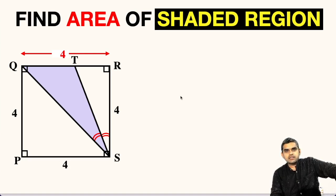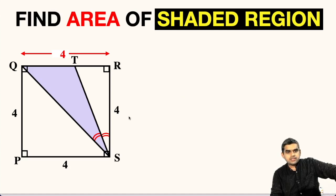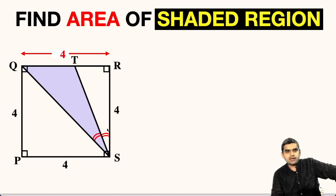Welcome to my YouTube channel. Today I'm back with another interesting question. In the figure, a square PQRS is given, and each side of this square is equal to 4 units.